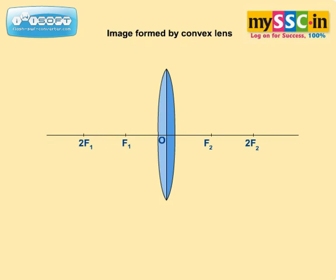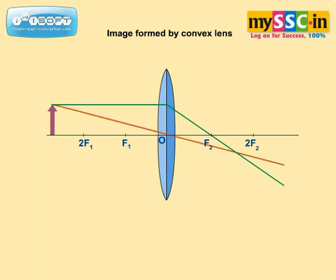Image formed by convex lens. To find the position of the image, draw three rays starting from the object. Draw an incident ray parallel to the optical axis. After refraction, it passes through the second principal focus F2 of the convex lens. Draw an incident ray passing through optical center O. After refraction, it emerges without any deviation.